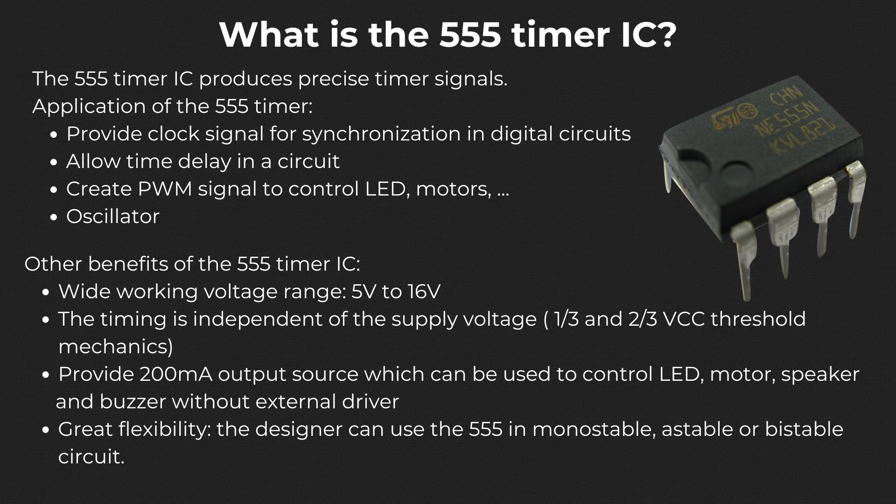Well, first of all, as its name implies, it is a timing IC, so its purpose is to produce precise timing signals. What this means is that the output oscillates between two voltages, supplied by the circuit designer, at a frequency chosen by the circuit designer. Therefore, the IC can be used to provide delay to a circuit or provide a clock signal, allowing synchronization of digital circuits.